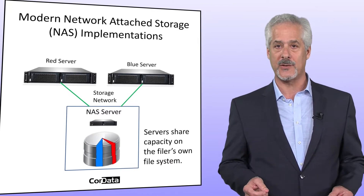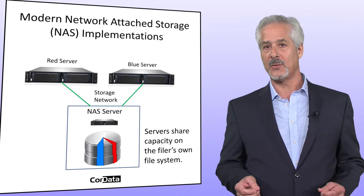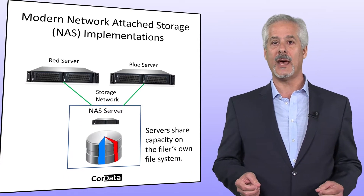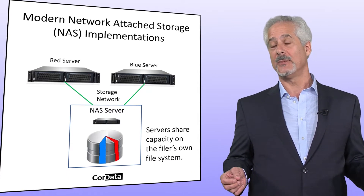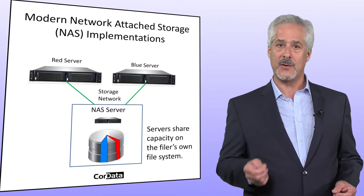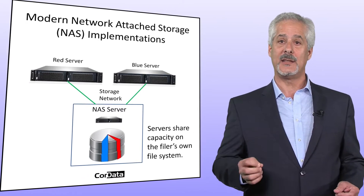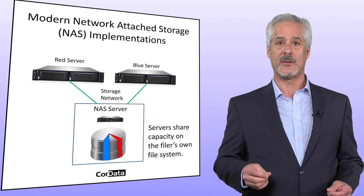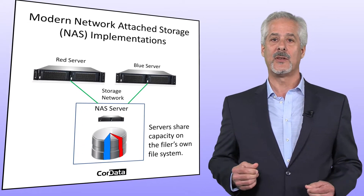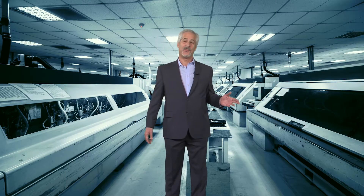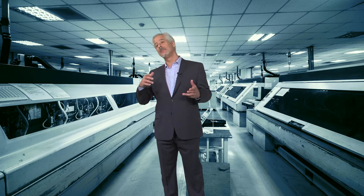With Network Attached Storage, or NAS, you have a filer. It manages its own storage locally and simply serves requests one after another from a group of servers attached to it via Ethernet. The protocol for requesting read/write services is known as NFS for Unix-based servers and CIFS for Windows-based servers. The key difference between SAN and NAS — just like the book analogy — is that SAN servers all own their own file systems, while a NAS filer owns one central shared file system.